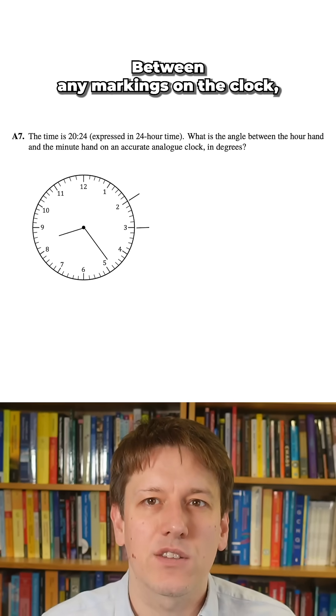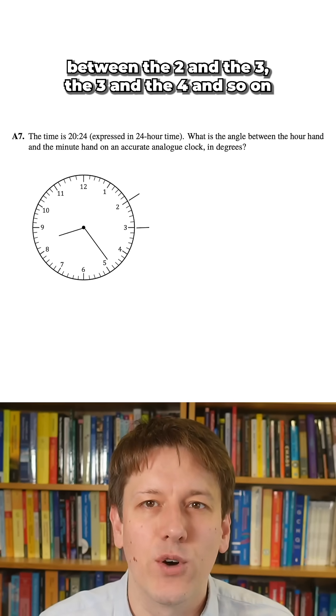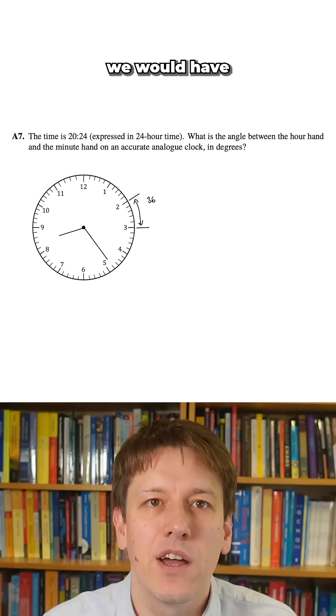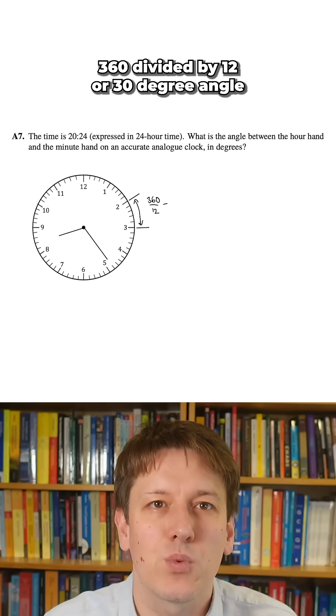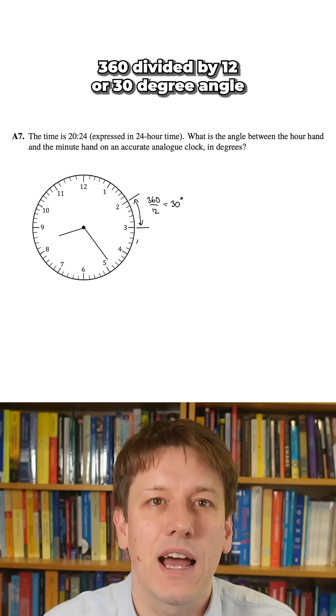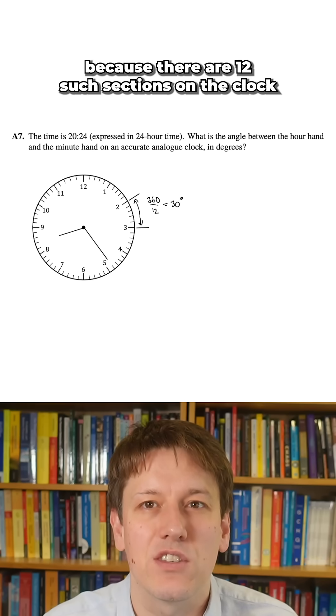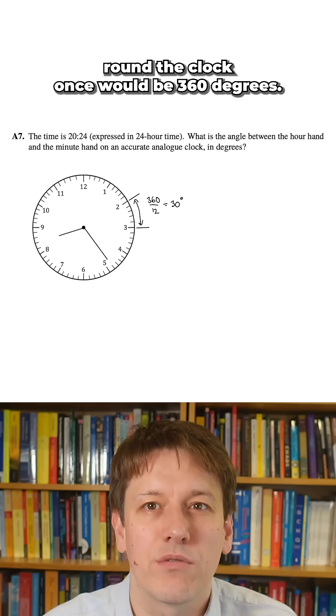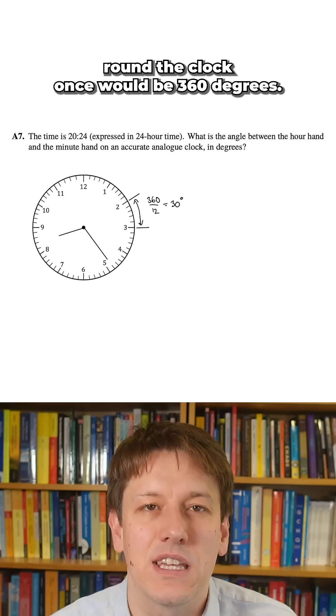Between any markings on the clock, between the 2 and the 3, the 3 and the 4, and so on, we would have a 360 divided by 12 or 30 degree angle, because there are 12 such sections on the clock, and all the way around the clock once would be 360 degrees.